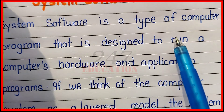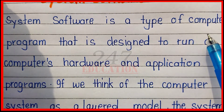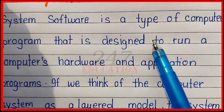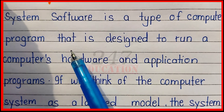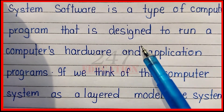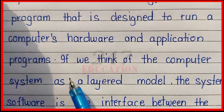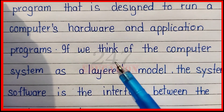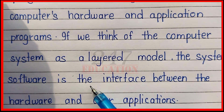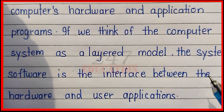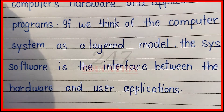System software is a type of computer program that is designed to run a computer's hardware and application programs. If we think of the computer system as a layered model, the system software is the interface between the hardware and user applications. Thank you.